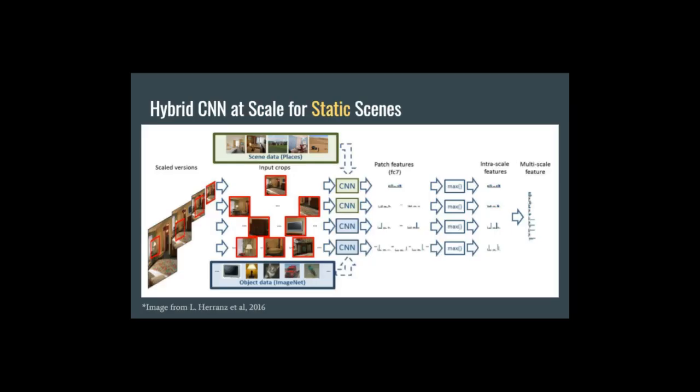One novel approach for static scene recognition is creating a scaled hybrid CNN model. Given the initial image, image patches are cropped, starting from small scales up until the entire image is considered. The reasoning behind such an approach is the fact that smaller scale images mainly contain objects, meaning semantic information, while larger scales also include contextual clues. Therefore, we can apply different networks depending on the scale — either a pre-trained scene CNN or a pre-trained object CNN — depending on the expected content of the patches. The extracted patch features are then combined, resulting in a multi-scale feature per image, which provides the final classification for the given scene.